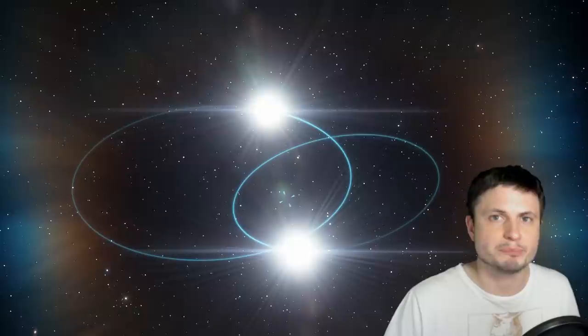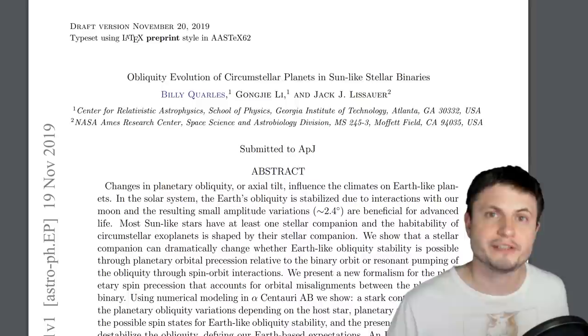Now Alpha Centauri has two stars, star A and star B. We haven't really discovered any planets here but the scientists behind this paper wanted to investigate would it be possible for an Earth-like planet to survive around these stars. More specifically, if we have a binary star system would a planet be able to maintain Earth-like conditions?